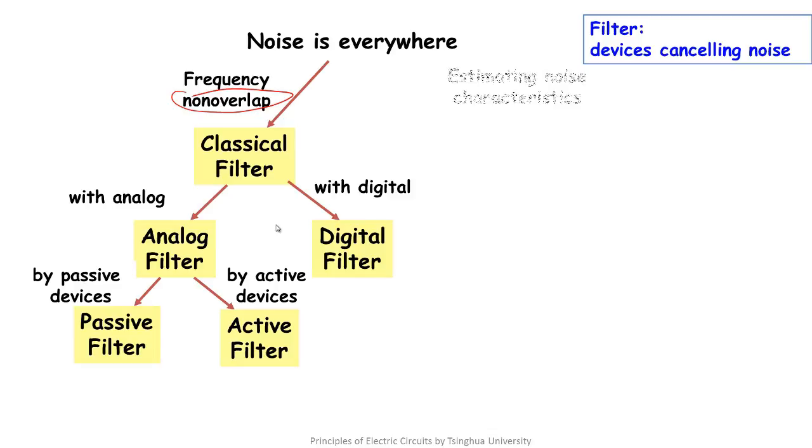Sometimes the frequency of the noise and the signal frequency are overlapped. In this case, we need to estimate the characteristic of the noise and then design a modern filter.